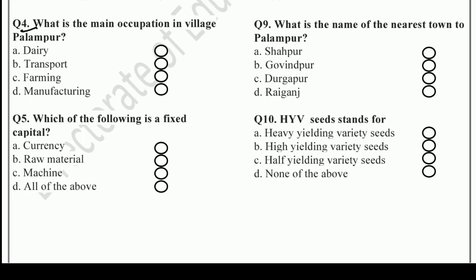Question number 4: What is the main occupation in village Palampur? Options are: Dairy, Transport, Farming, or Manufacturing. The right answer is C — Farming.